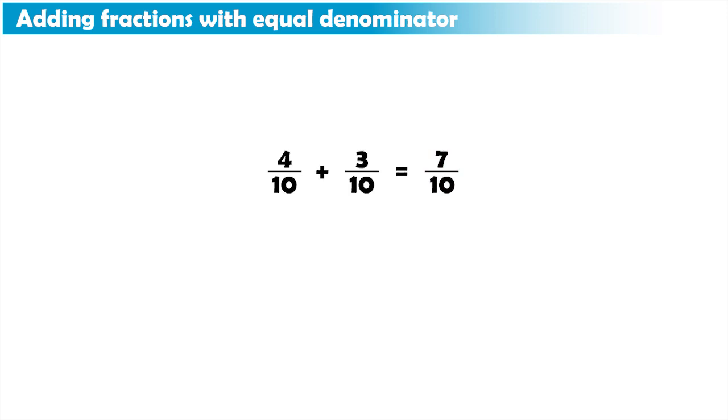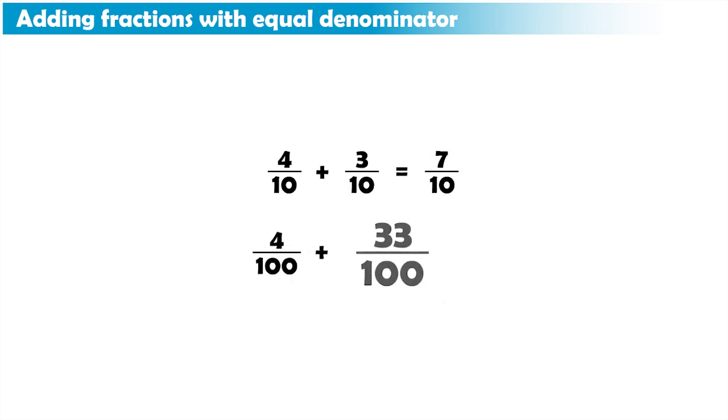And if we have 4 hundredths plus 33 hundredths, we add 4 plus 33 equals 37, and keep the 100, and our answer will be 37 hundredths.